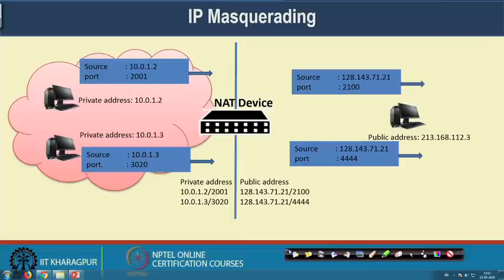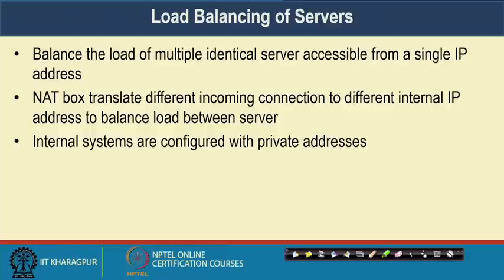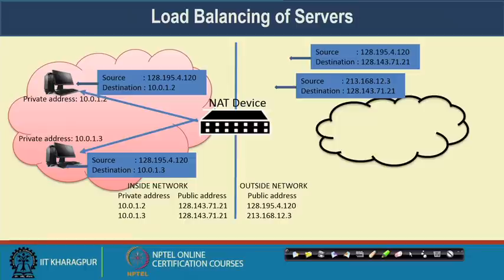That is the concept of IP masquerading, through which you can support a large number of users inside the private network. Another use case in NAT is that it can help with load balancing of servers. The load of multiple identical servers, all accessible from a single IP address, can be balanced. The NAT box translates different incoming connections to different internal IP addresses to balance the load, while internal systems are configured with private addresses.